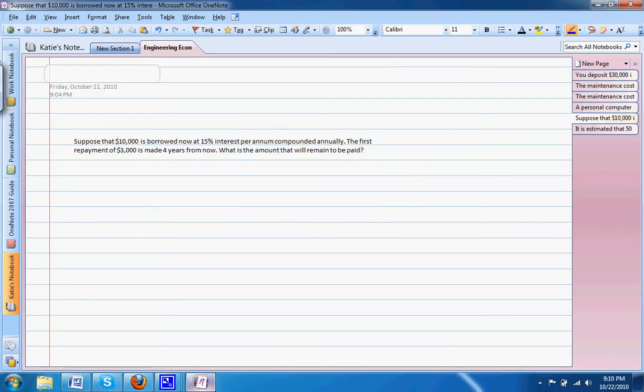In this problem, suppose that $10,000 is borrowed now at 15% interest per annum compounded annually. The first repayment of $3,000 is made four years from now. What is the amount that will remain to be paid?